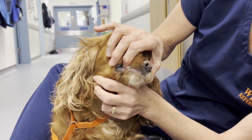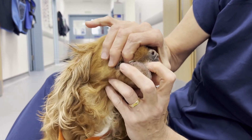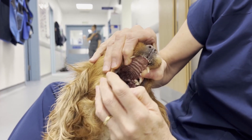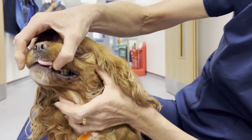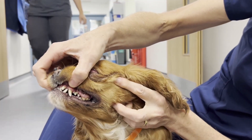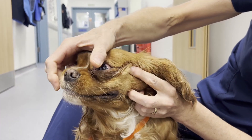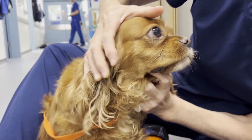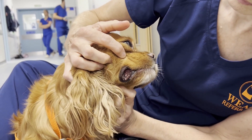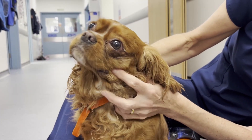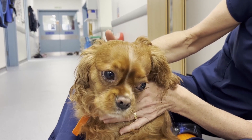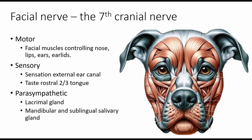Now we're doing a gag reflex. She's got normal jaw tone — it's quite difficult to open her mouth — normal looking tongue, and she has a normal gag. I'm showing you how baggy that lip is. We can see some drool coming out and increased tearing from the eyes, whereas that is a more normal lip for a Cavalier King Charles Spaniel. All of these deficits are very characteristic of a left-sided facial nerve paralysis.